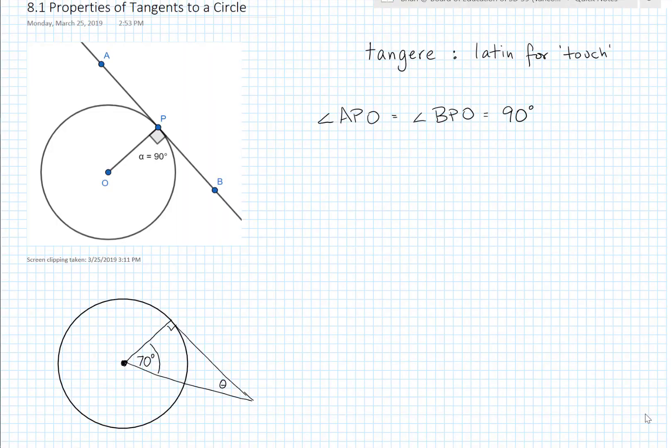In Chapter 8, we're going to be looking at properties of a circle, and in particular, angles. And we're going to start off with looking at properties of tangents to a circle.